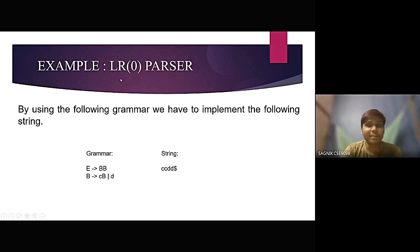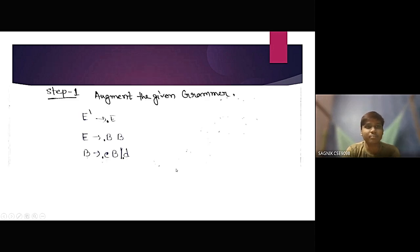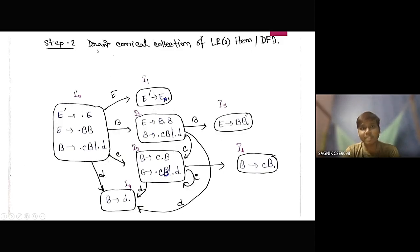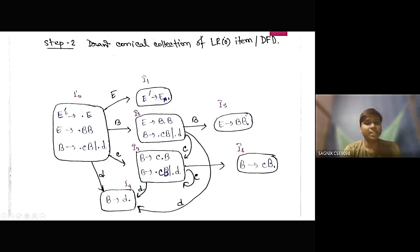So here is an example of the LR zero parser. By using the grammar E produces BB and B produces CB or D, we have to implement the string CCDD dollar. At the first step, we augment the given grammar: E' produces dot E, E produces dot BB, and B produces dot CB or dot D. In step two, we draw the canonical collection of LR zero items or DFA. The initial state has E' produces dot E, E produces dot BB, and B produces dot CB or dot D.